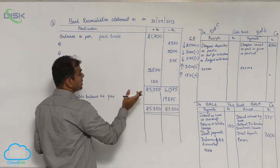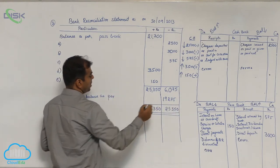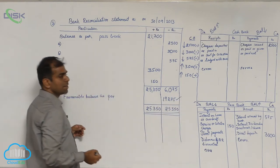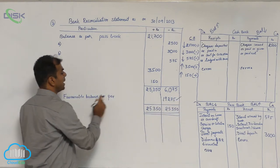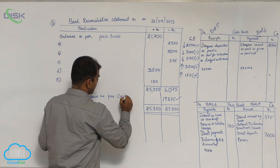Because the plus column total was more, the difference will be naturally called as favorable balance as per cash book.